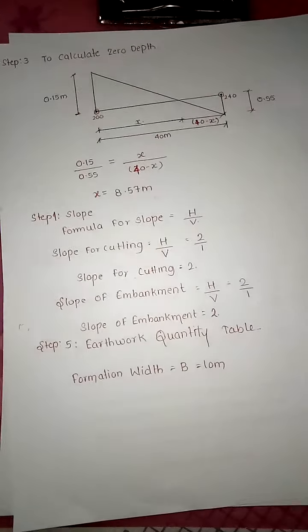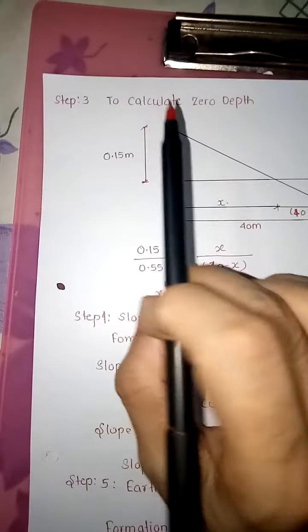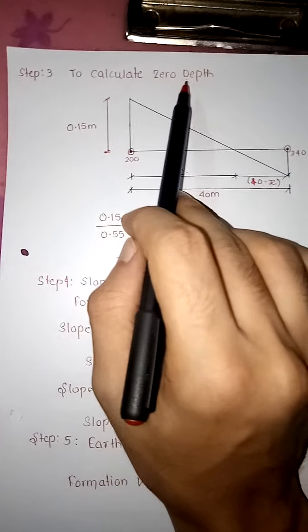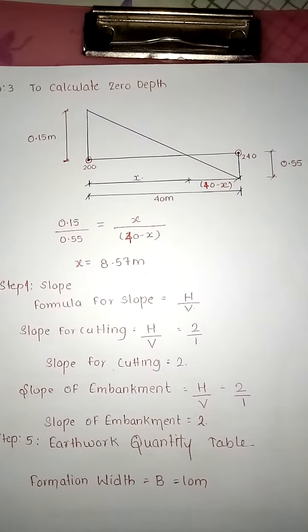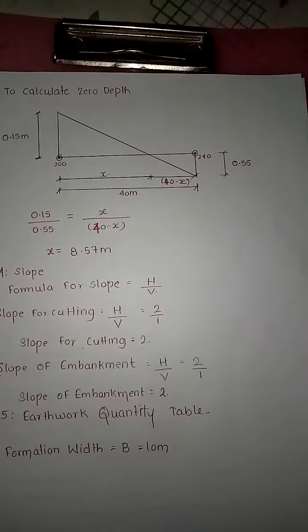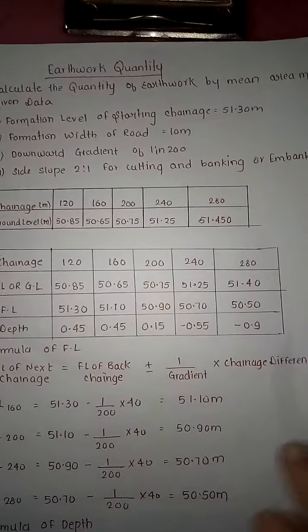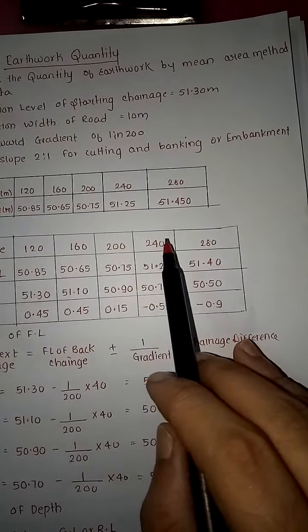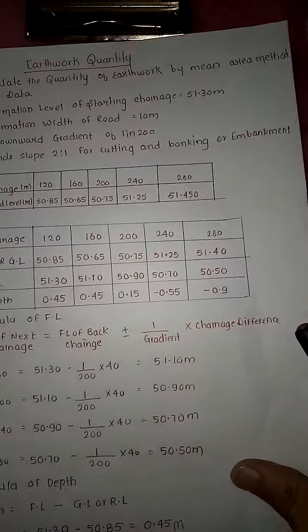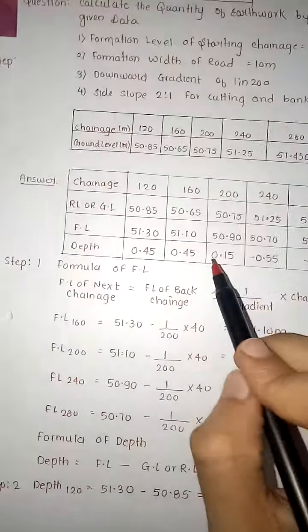If minus sign comes in depth, we show minus sign in the table as it will be used ahead. Now step number 3: calculate zero depth. We have a point where depth is zero, which comes between 200 and 240.